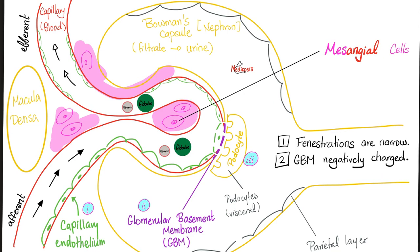In diffuse proliferative, all of your glomeruli are affected, and you have proliferation of neutrophils with hypercellularity under the microscope. You will see subendothelial immune complex deposits here under the endothelium.